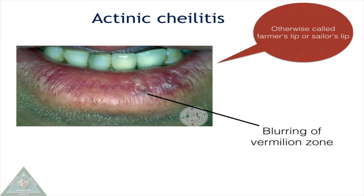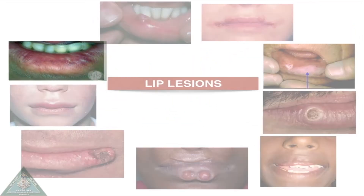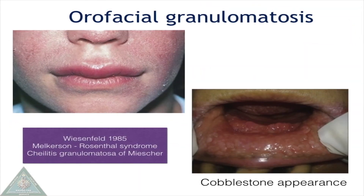Actinic cheilitis is often seen in patients who are chronically exposed to sunlight, hence the name farmer's lip or sailor's lip. It is characterized by blurring of the vermilion zone.